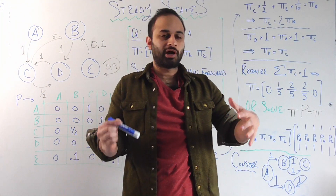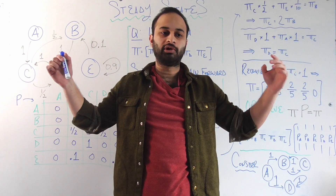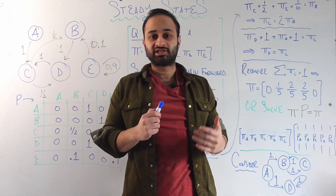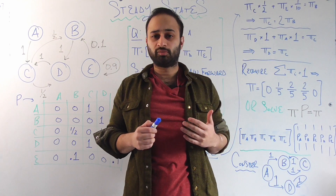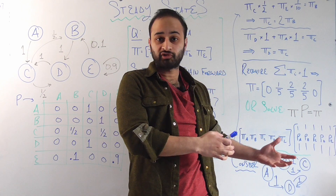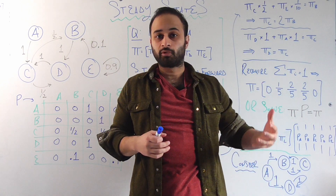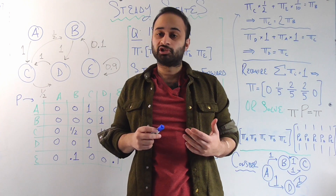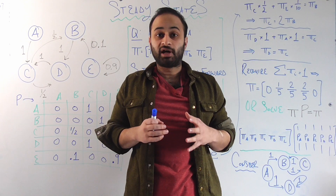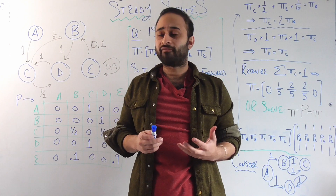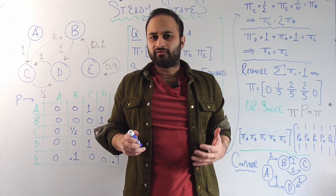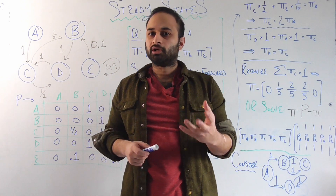Hey everyone, welcome back. Today we're going to do a follow-up video on the original video on Markov chains. In that one, which is linked below, we touched a little bit on steady states or stationary distributions of a Markov chain, which are really important both for Markov chains and for going forward — things like MCMC, which is Markov chain Monte Carlo. We're going to dive deeper into what it means for a Markov chain to have a steady state, also called a stationary distribution, what it means intuitively, and then mathematically how to get one.